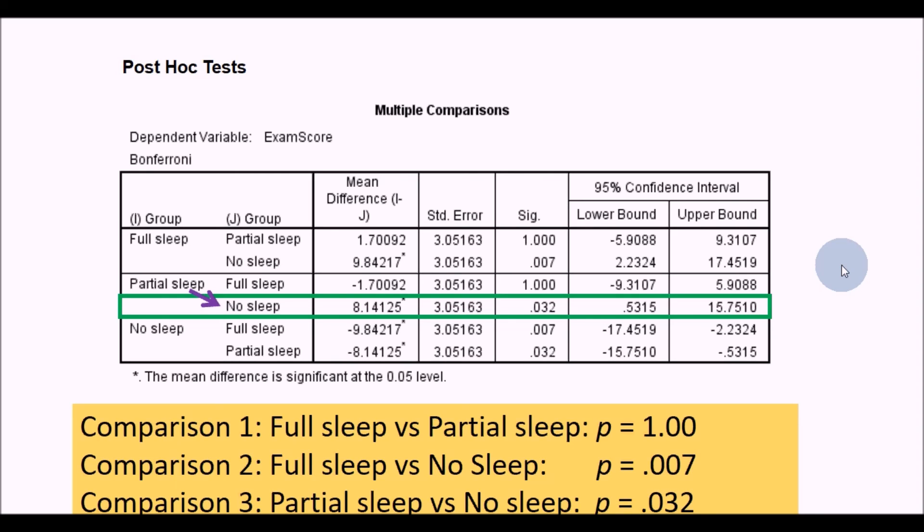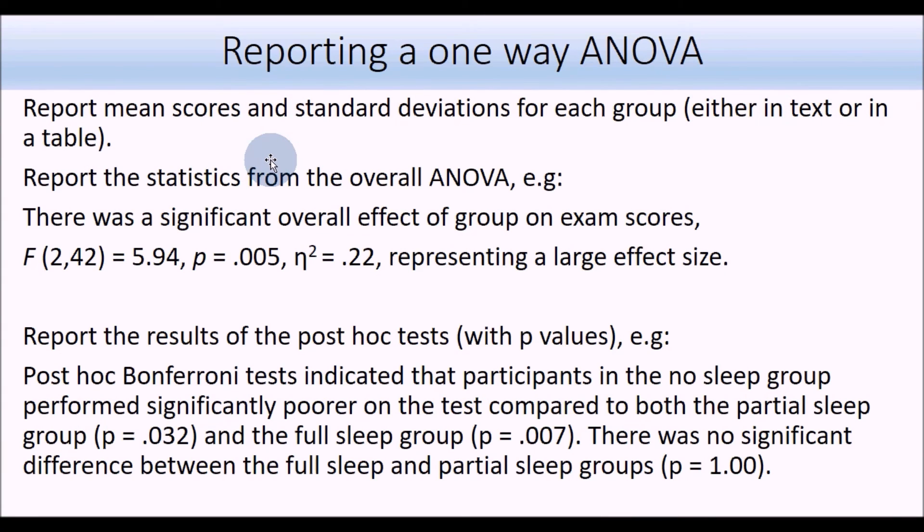To report a one-way ANOVA, you need to report the mean scores and standard deviations. You could either do this in a paragraph or in a table. If you've got more than three groups - say you're going on to four or five groups - it's sometimes better to just stick that information in a table somewhere. You want to report the statistics from the overall ANOVA, so this would be the F statistic, the p-value, and the eta squared, and then just indicate what the eta squared means - does it represent a small, medium, or large effect?